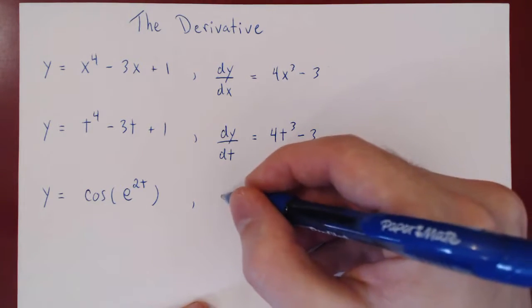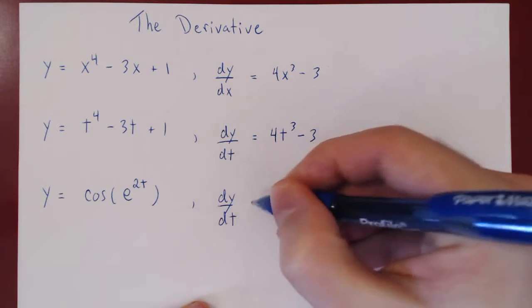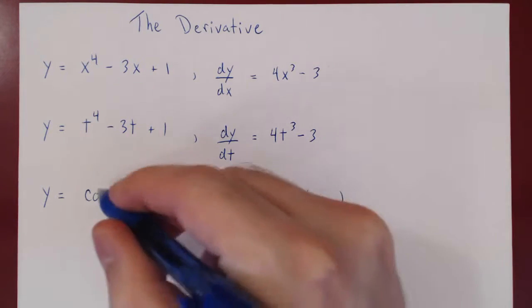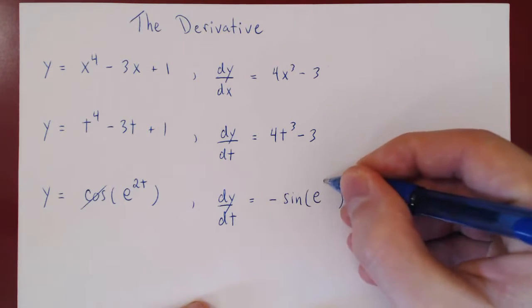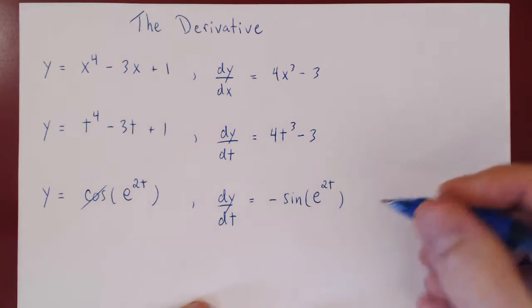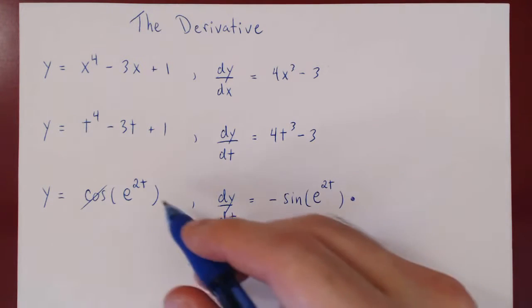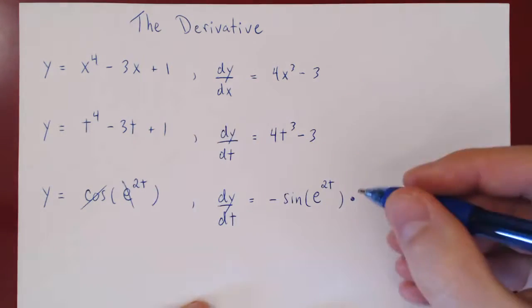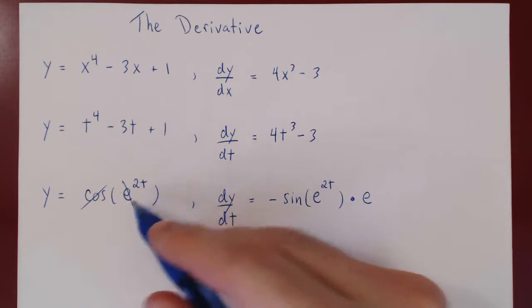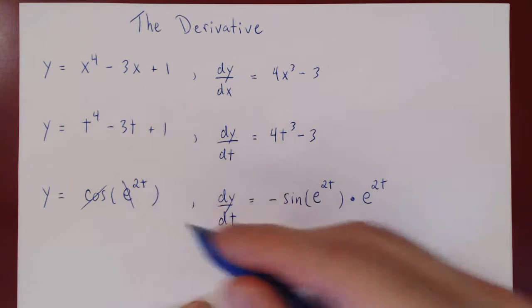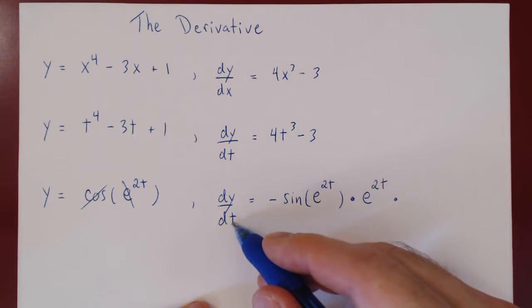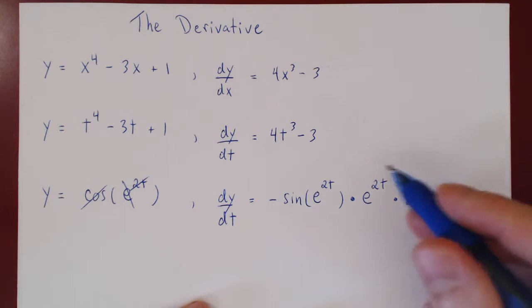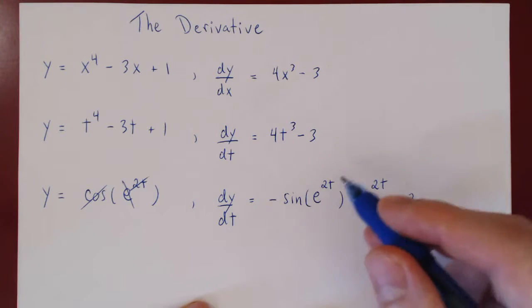Here y is a function of t, so we differentiate y with respect to t. The derivative of cosine is negative sine — negative sine of the argument, e to the 2t. But there is still e to the 2t left over; by the chain rule we have to multiply what we have so far by the derivative of what's left over. The derivative of the exponential function base e is itself, e to the 2t. There's a 2t left over, times the derivative of 2t with respect to t, which is just 2. Writing simpler terms first, we get negative 2e to the 2t sine of e to the 2t.